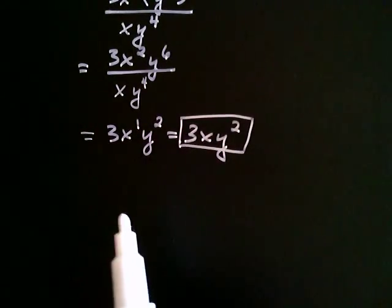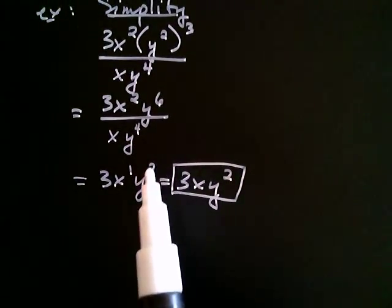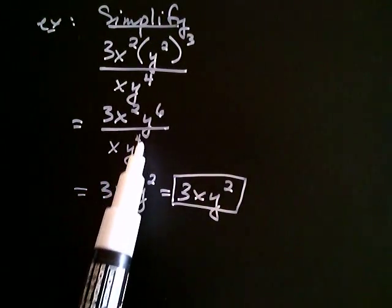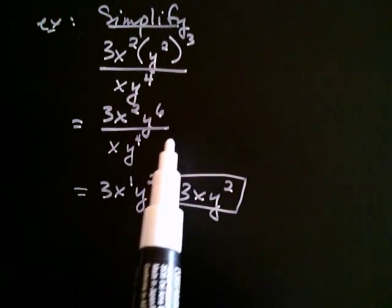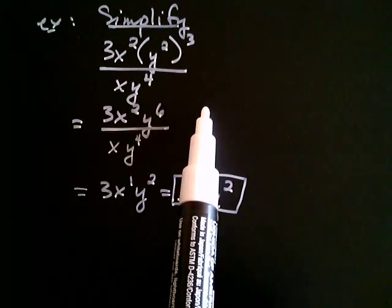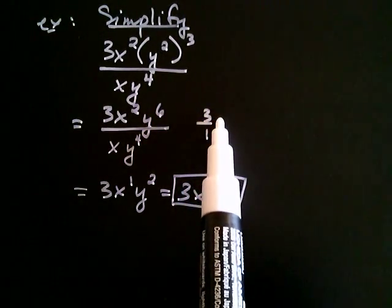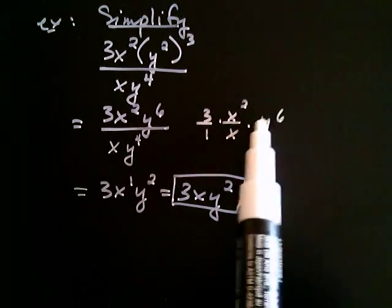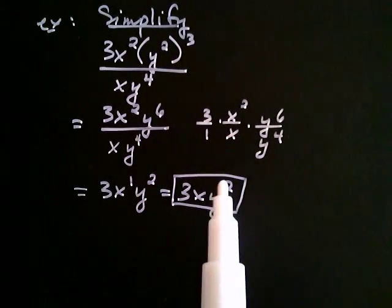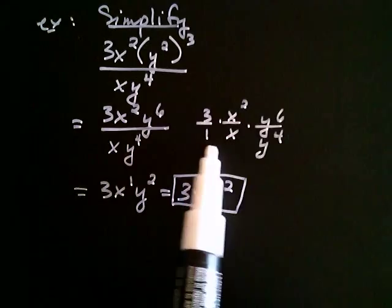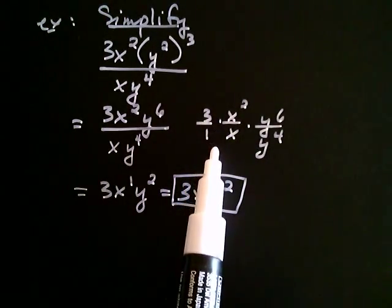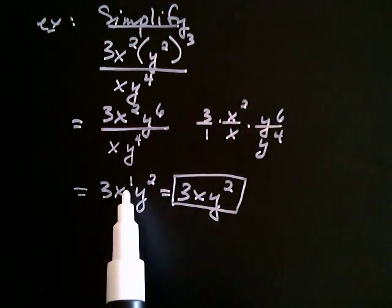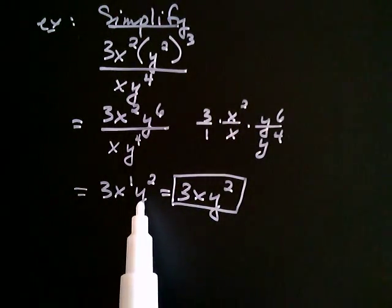Note that what I was really thinking was this: three over one, times x squared over x, times y to the sixth over y to the fourth. We don't write all of this out, but that's the thinking: three over one is three, two minus one gives x to the first, and six minus four gives y squared.